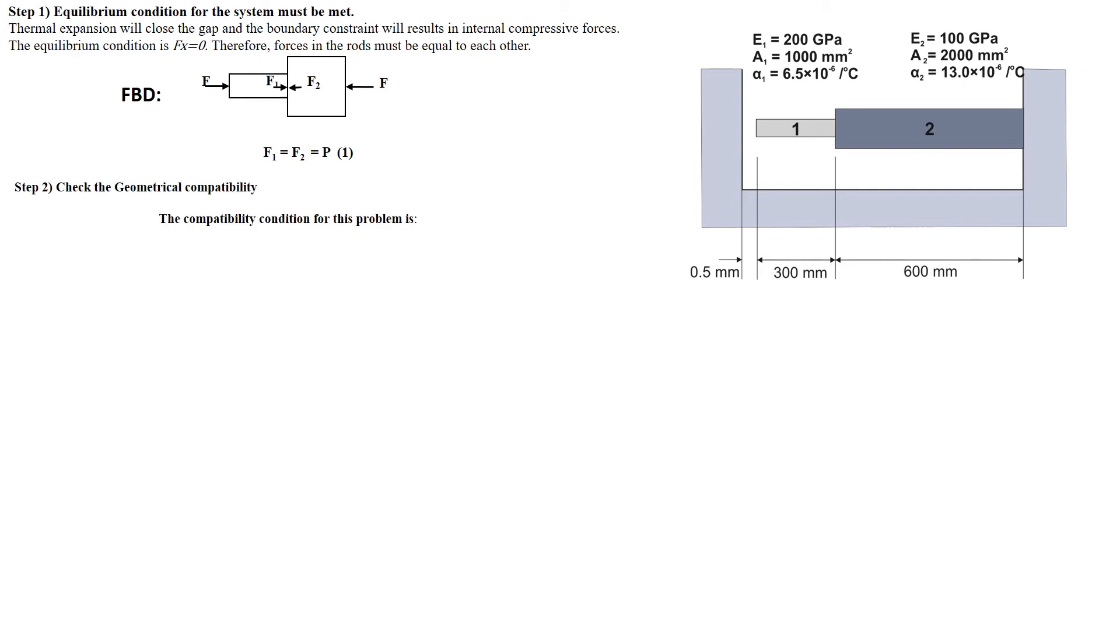Step 2: Check the geometrical compatibility. The compatibility condition for this problem is delta 1 plus delta gap equals delta 2. Therefore, the compatibility condition can be rewritten as shown.